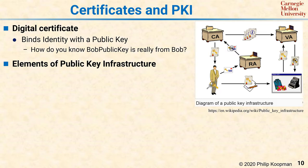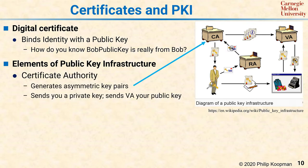To get there, you have a somewhat complicated process involving three different players. The first is a certificate authority, or CA. This entity generates asymmetric key pairs and sends the owner of the key pair a private key, and sends the validation authority — which we'll get to in a minute — the public key. So if you're Bob and you want to prove to everyone else you're Bob, you go to the CA, ask for a key pair, and the CA gives you your private key and your public key, and lets everyone know that this is your public key and that you are who you say you are.